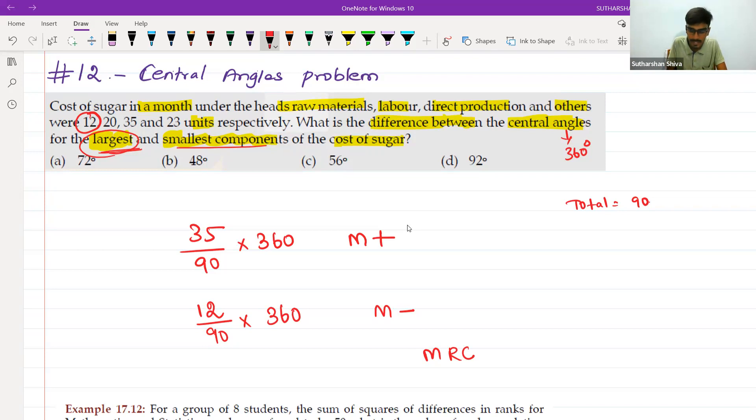35 divided by 90 into 360 M plus. 12 divided by 90 into 360 M minus MRC. You will get after MRC, you will get exactly 91.9999. It keeps on going. You can say it is 92.